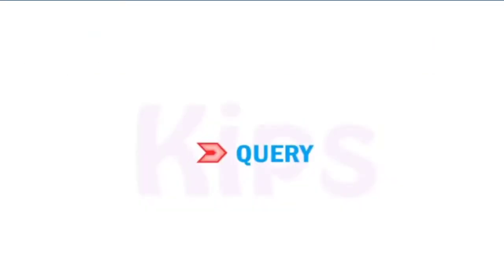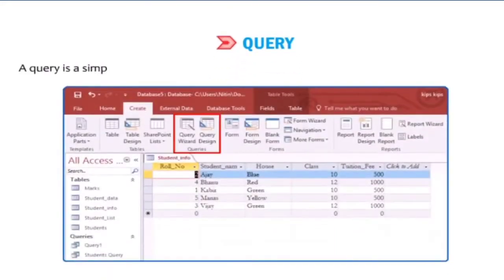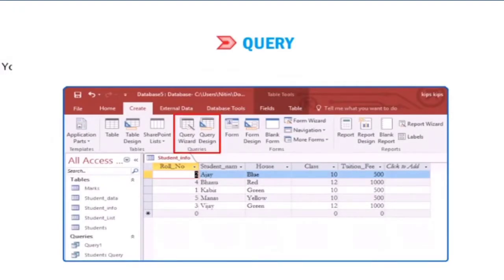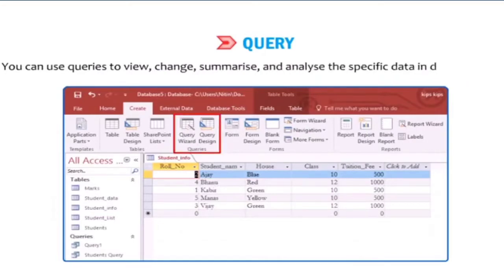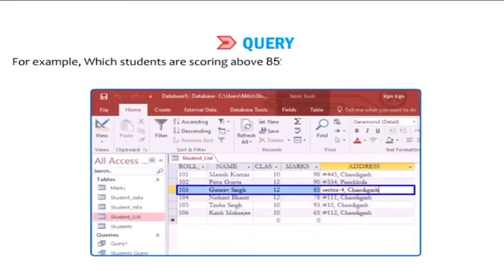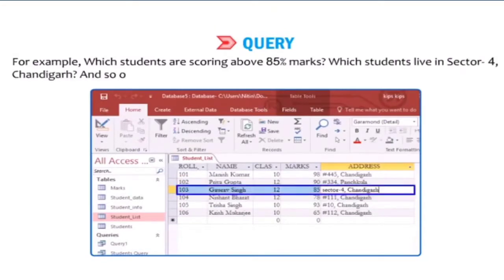A query is a simple question that you ask to find specific information from the database. In Access, when you build a query, you are defining specific search conditions. You can use queries to view, change, summarize, and analyze specific data in different ways. In daily life, you make several types of queries, for example: which students are scoring above 85% marks, which students live in Sector 4 Chandigarh, and so on. You can make quick decisions depending on that criteria.